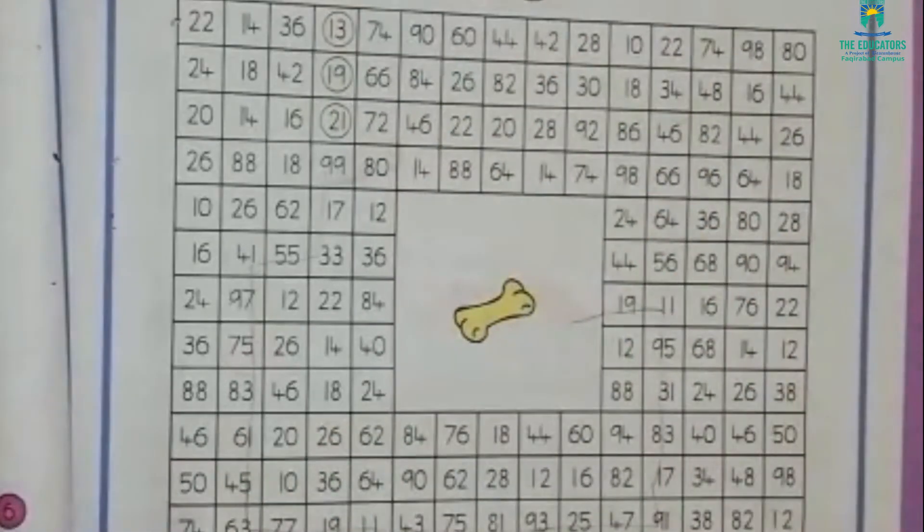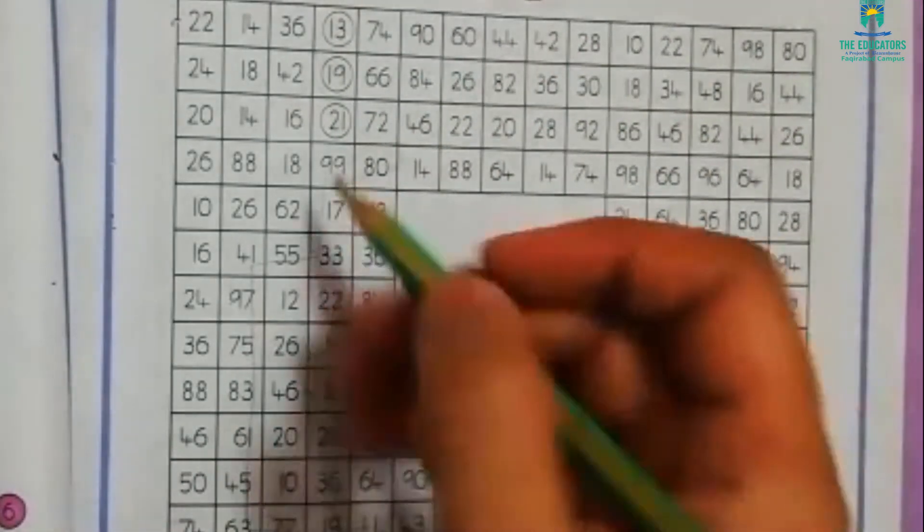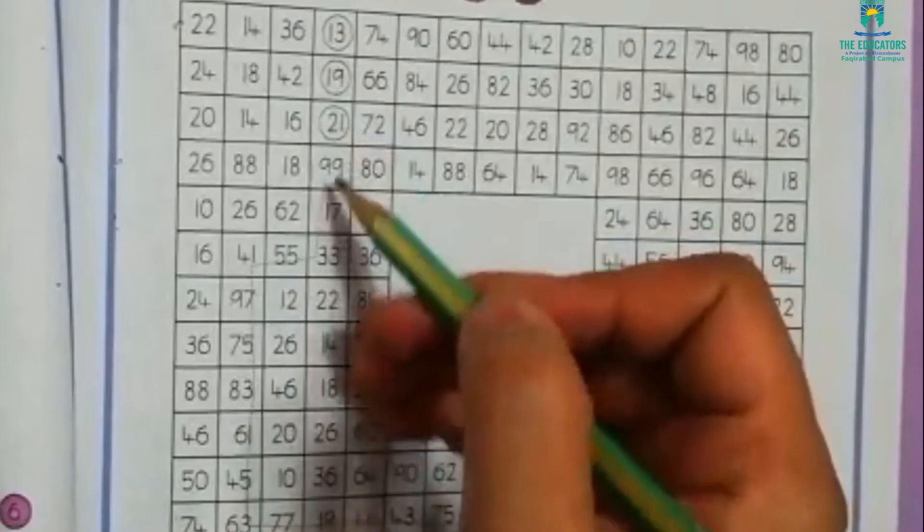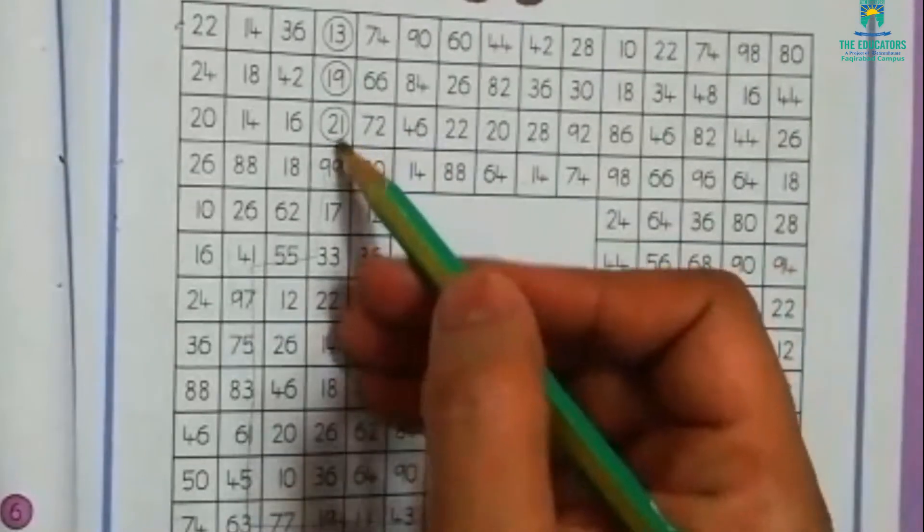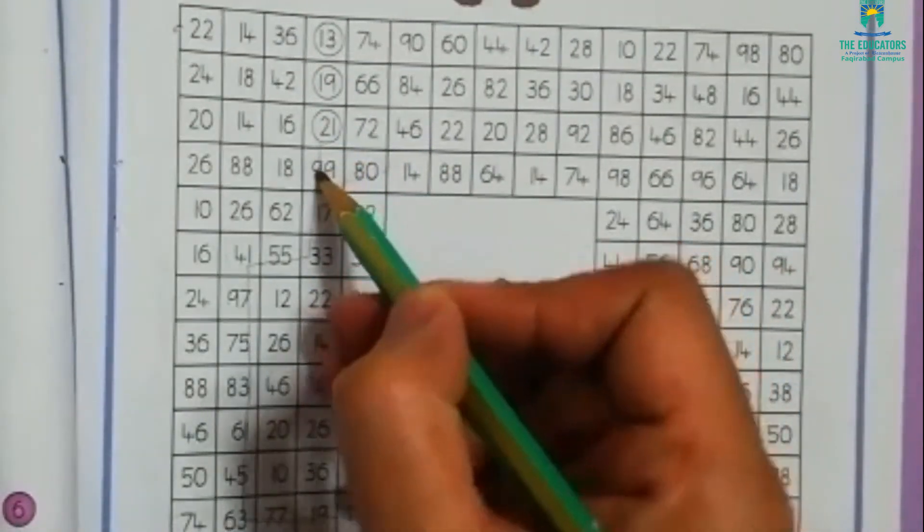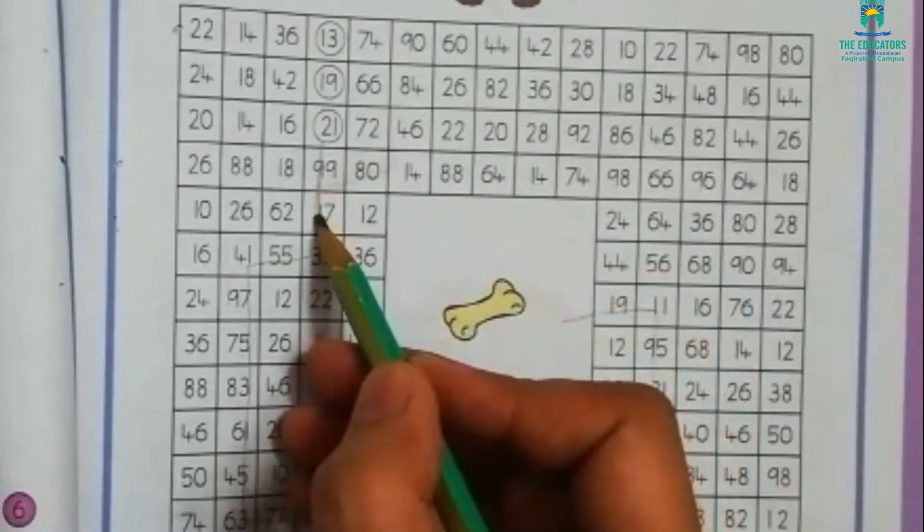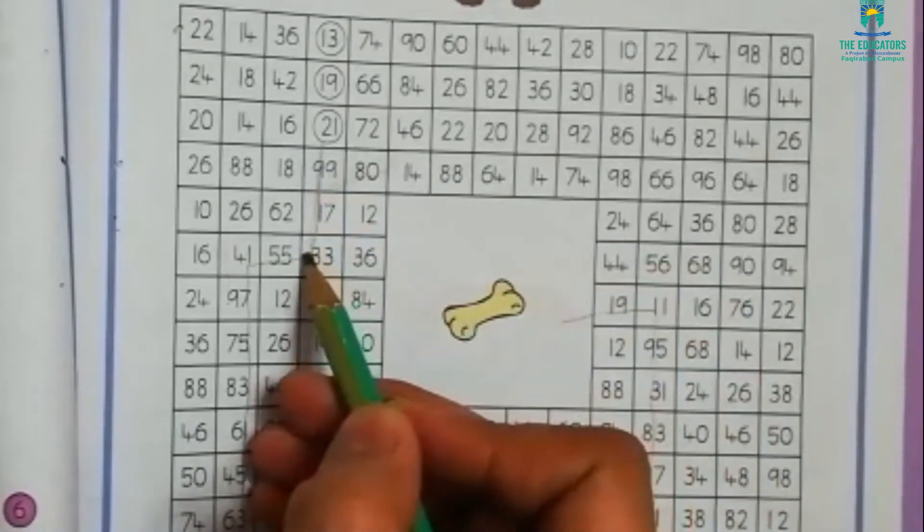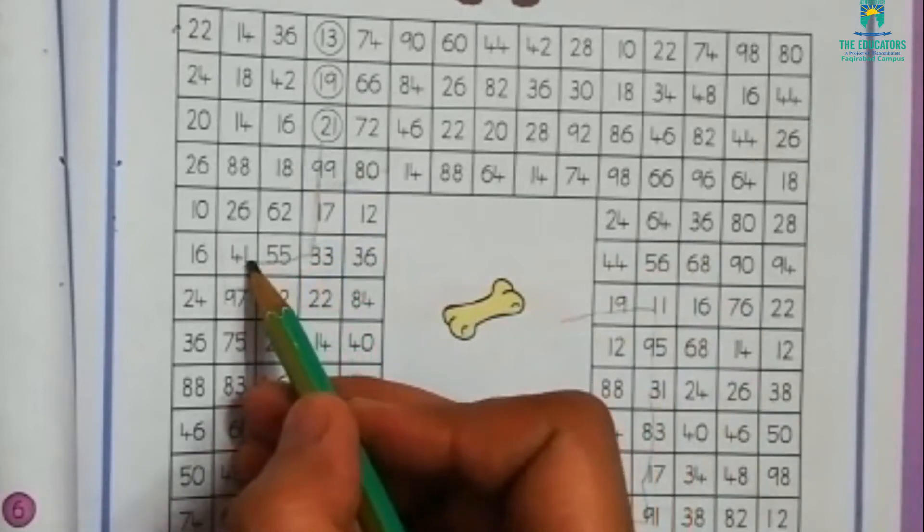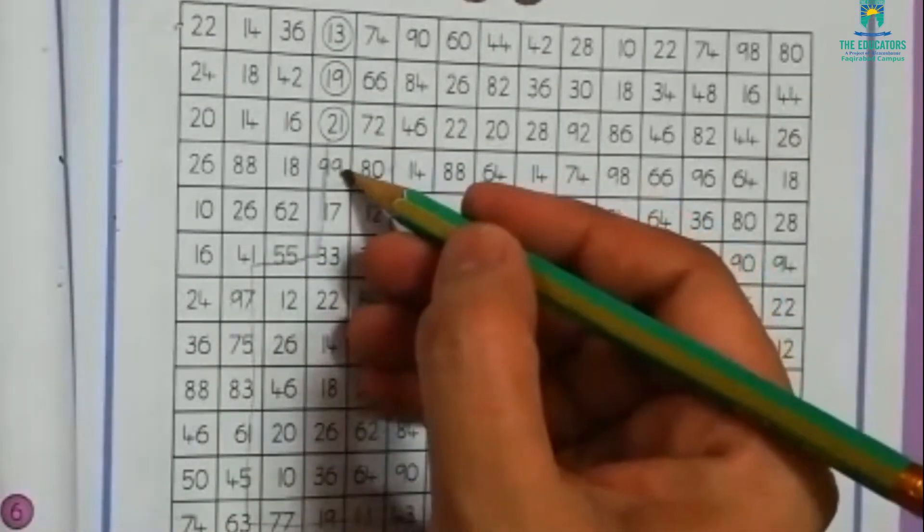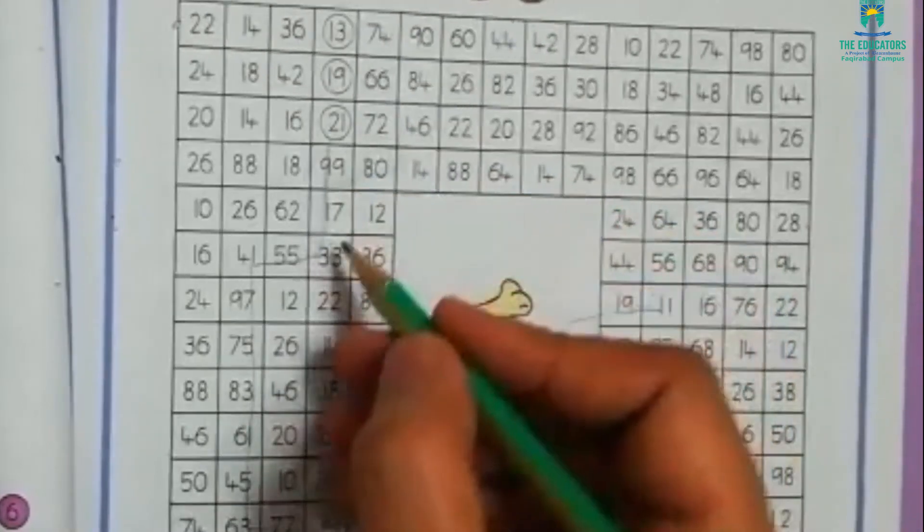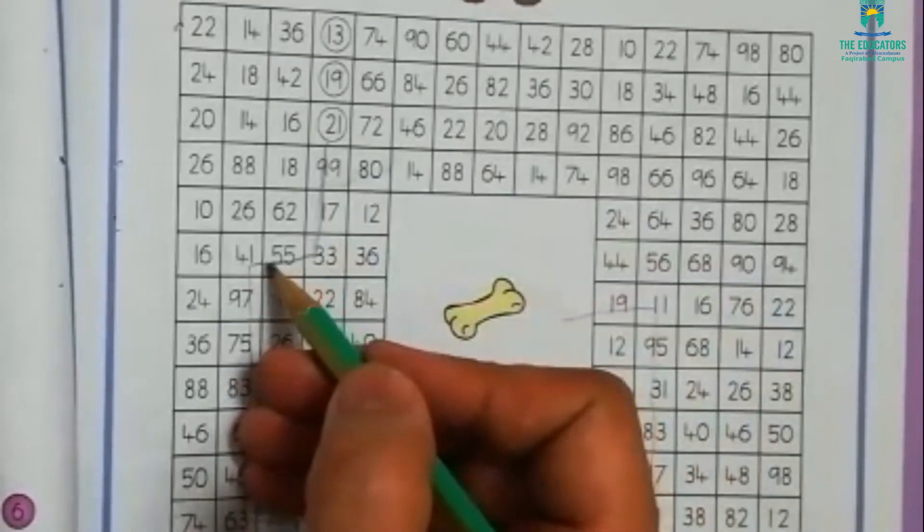Now we have to move from 21 to 99, then 17, 33, then 55. You can see that in these numbers we have 9, 7, 3, and 5 in units place.